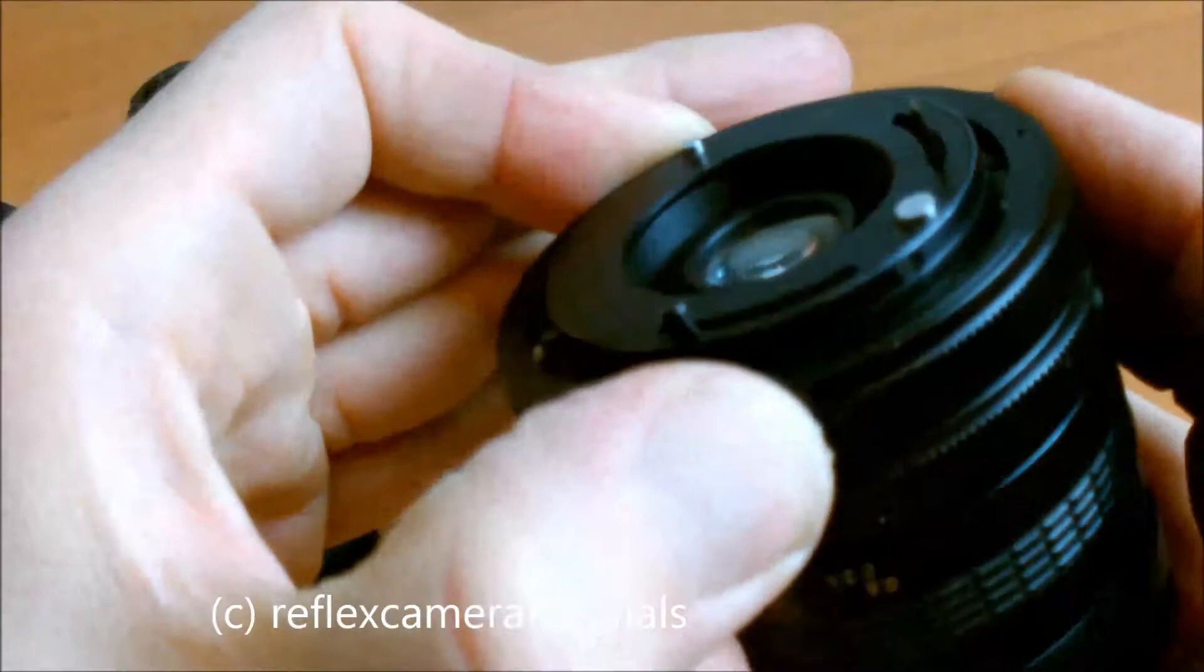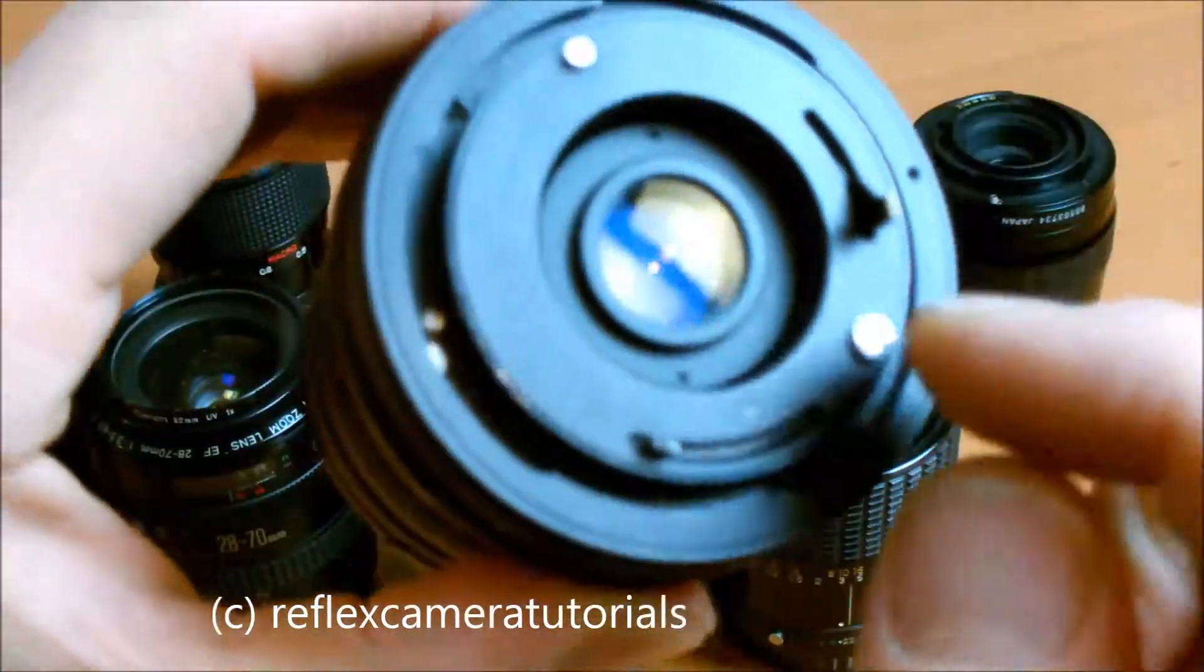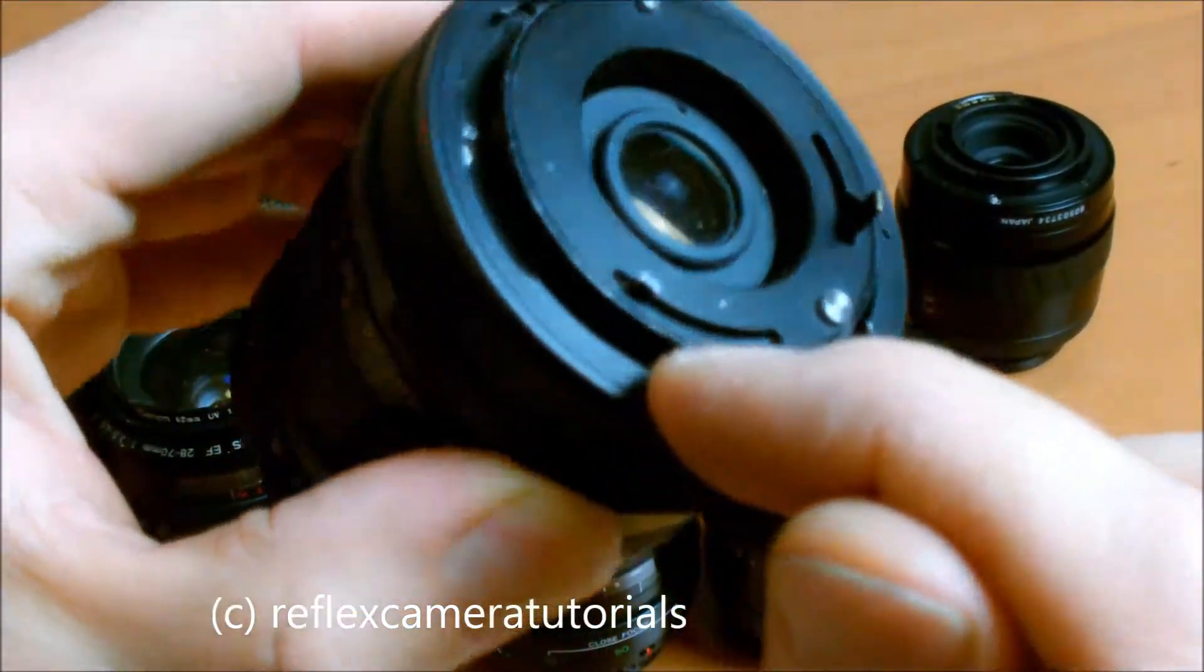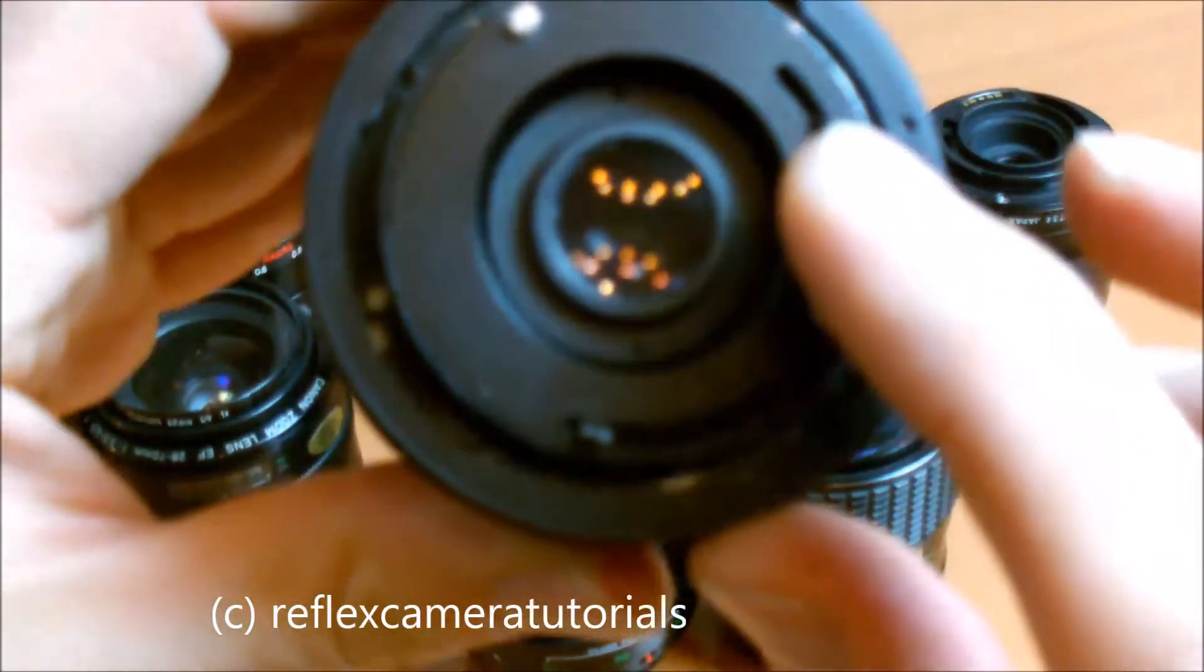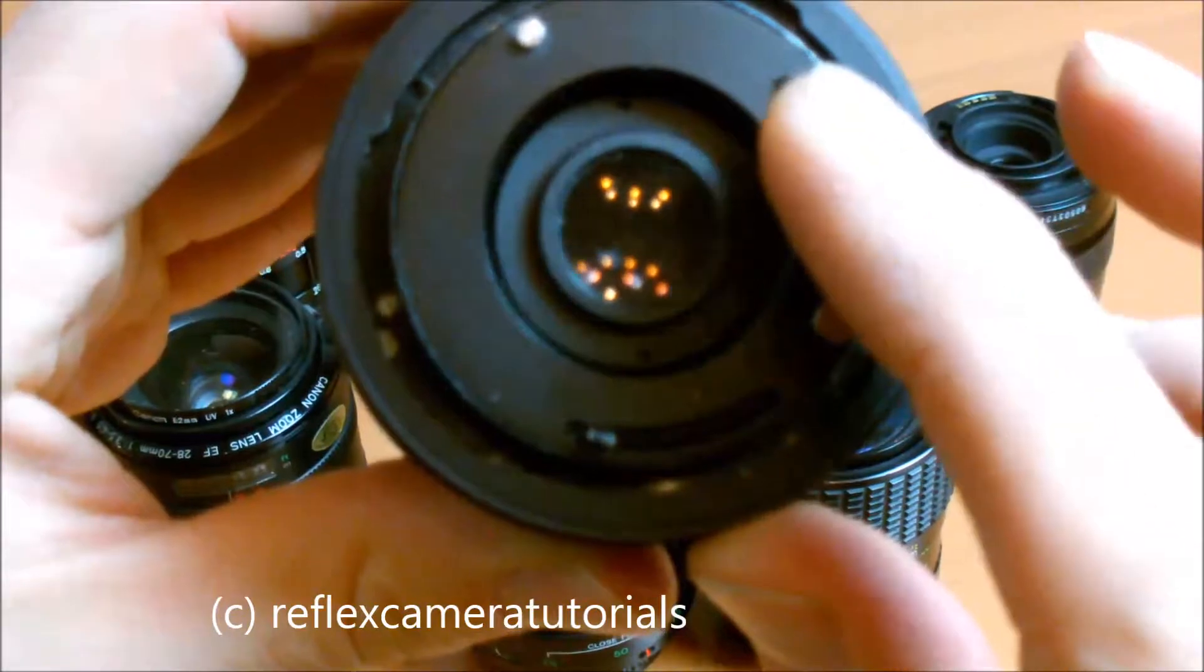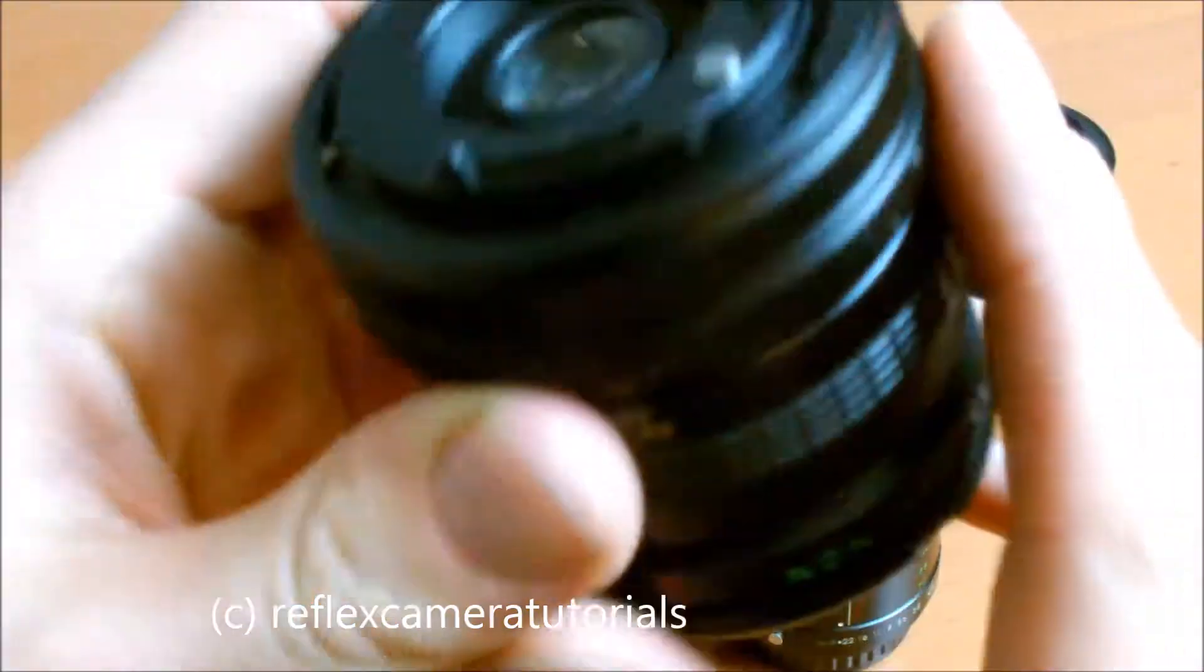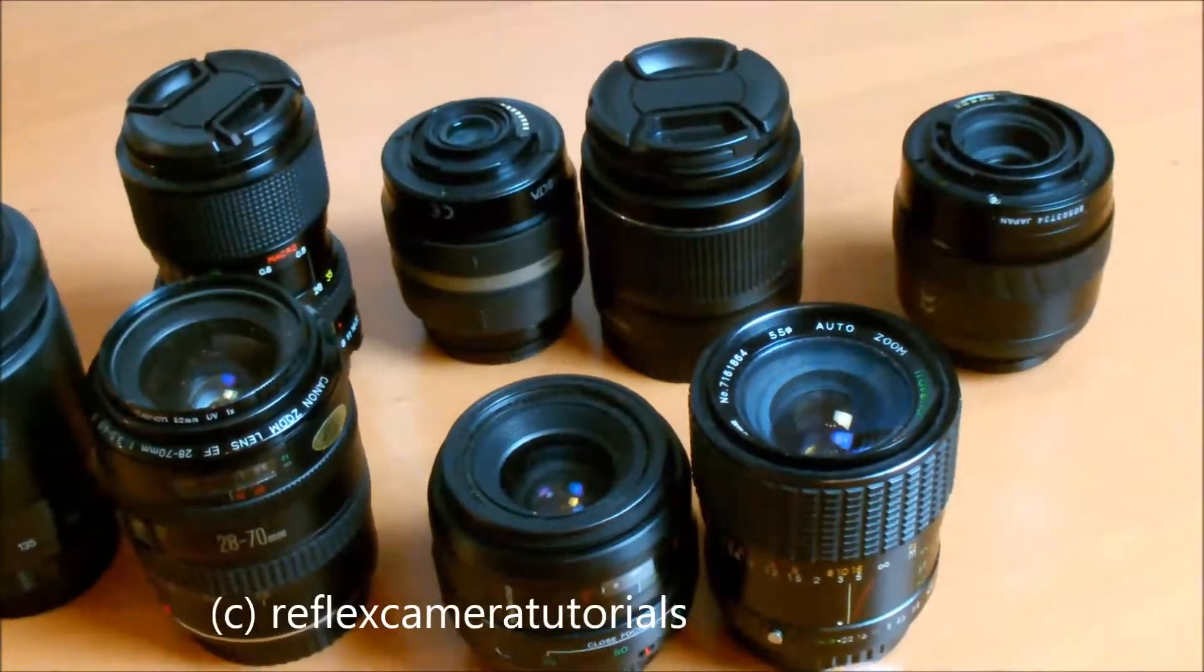Not that one, that one. And you see this has a gap between that and of course here for the aperture, again a small switch. This is the FD lens.